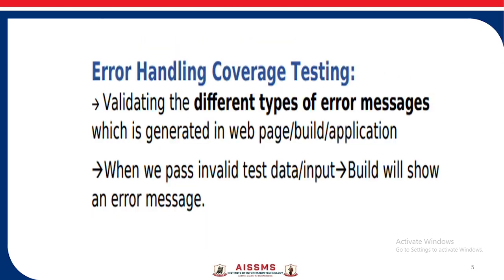Error handling coverage testing includes checking whether the system shows the error message or not. If in the customer requirement the mobile number should accept 10 digits, and the developer develops the build accordingly, then if the customer enters two digits and clicks the OK button, the system should give a message: please enter a 10-digit mobile number. This is a process of validation — whether the system is showing the error message or not.